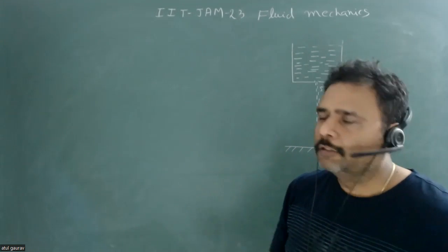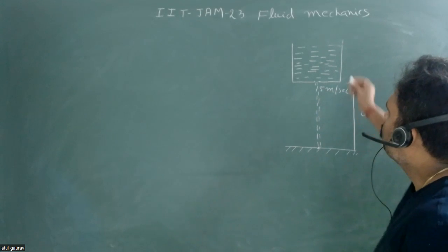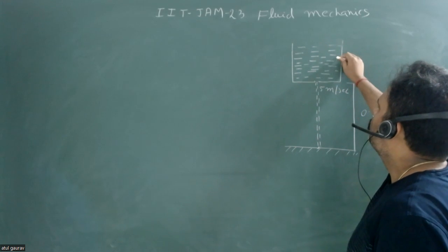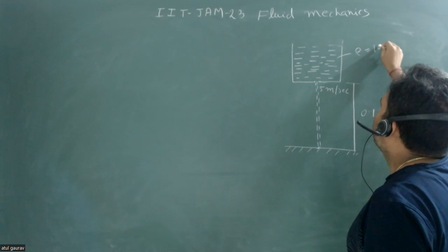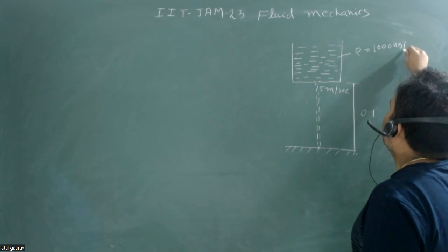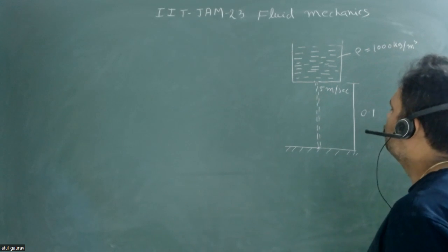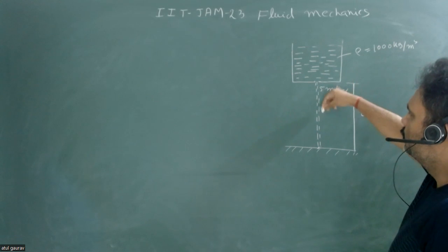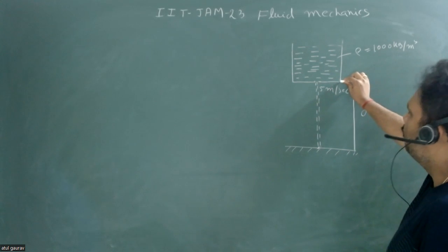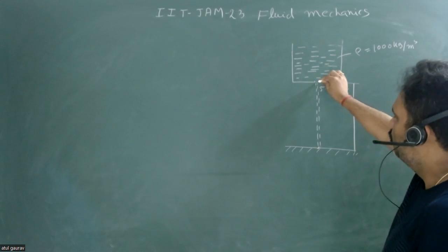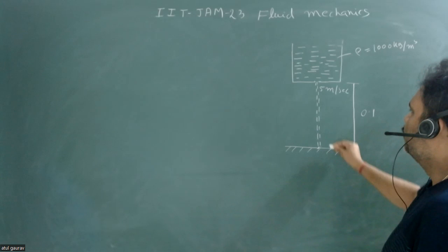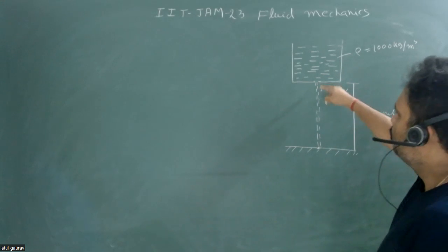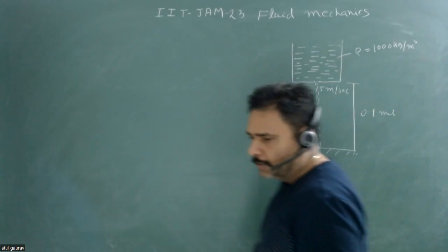There is a water tank with ρ of water equal to 1000 kg per meter cube. At the bottom there is a small hole, and from there water is going down. The height from the hole to the surface of earth is just 0.01 meter.